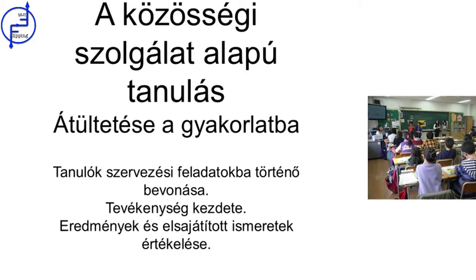The second phase is about planning how to implement the experience. It's important to involve the students and have them participate in the process. Planning will help to specify how the experience and objectives to be achieved at the academic and social levels will be carried out. Once this is done, the project is implemented and learning is analysed. To end this phase, you have to carry out an evaluation of the learning acquired and the results of the service that's been provided to the community.